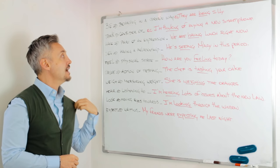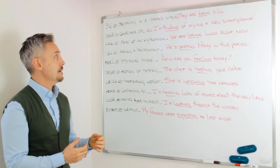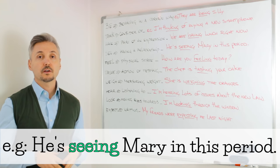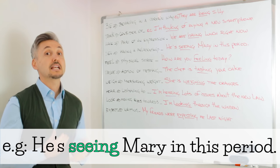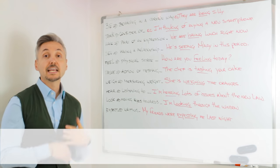See. Having a relationship. For example, he's seeing Mary in this period. He's seeing. So, he's having a relationship. He's going out and seeing her.